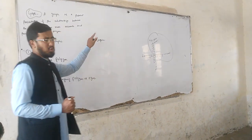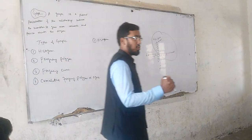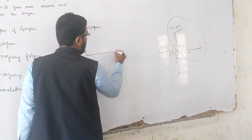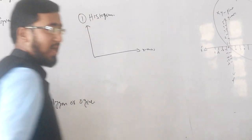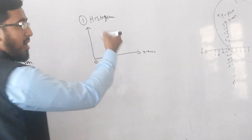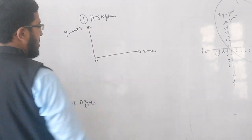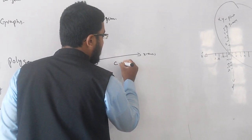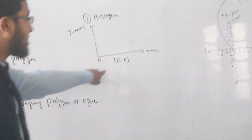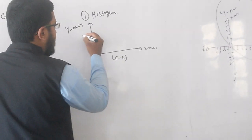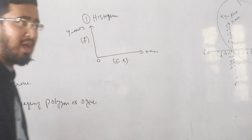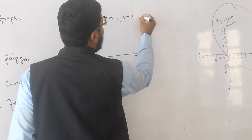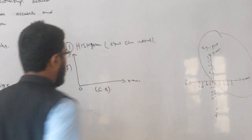So how to construct the histograms? When we are going to construct the histograms, we need two things: the first one is your X-axis and the second is Y-axis. This is called X-axis; this is called origin point or starting point. This is called Y-axis. When constructing the histogram, on X-axis we take the class boundary — in short, CB. On Y-axis, we take the frequency of the respective classes. If we have equal class interval, we can construct the histogram using class boundary and frequency.